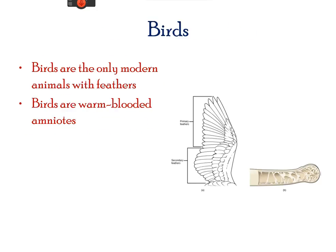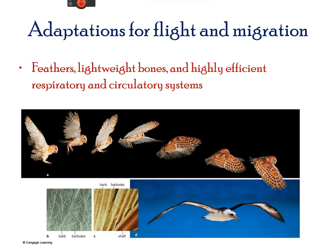Birds are the only animals with feathers, which help them to glide and insulate the body. Hence, they are warm-blooded animals. Birds possess a system of air sacs branching so that air can pass in one direction to the lungs, unlike mammals. Birds have several modifications to reduce body weight, which includes lightweight bones and an efficient respiratory and circulatory system.